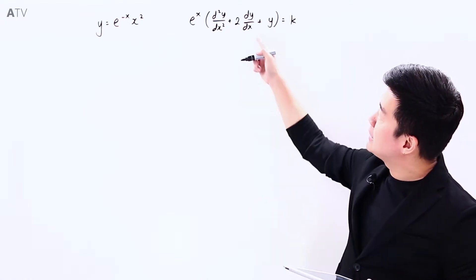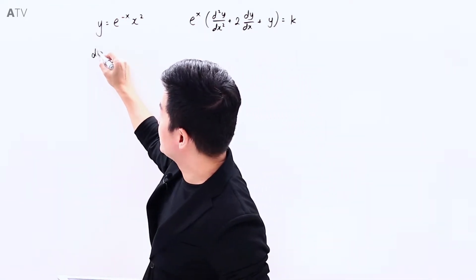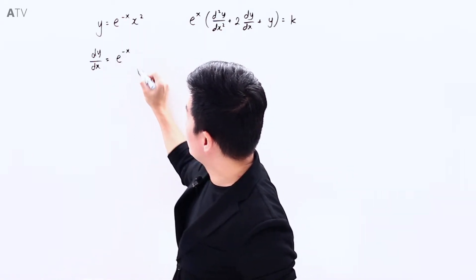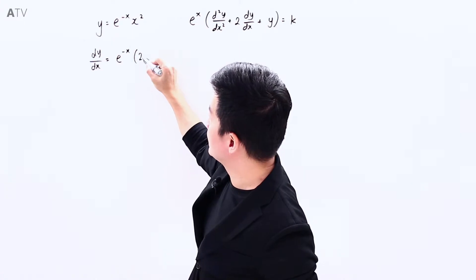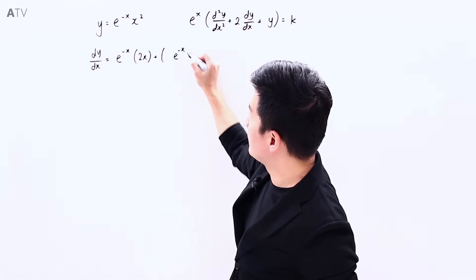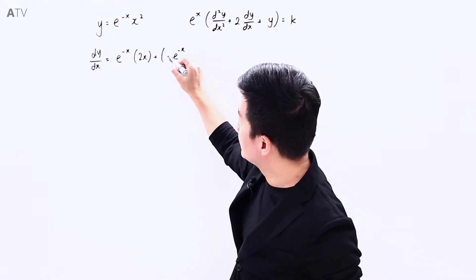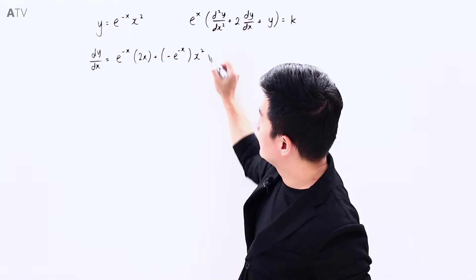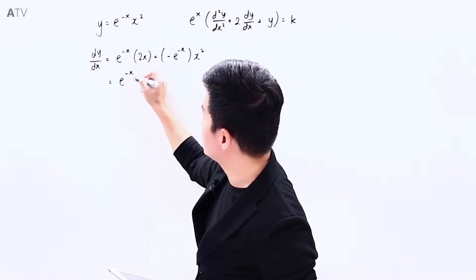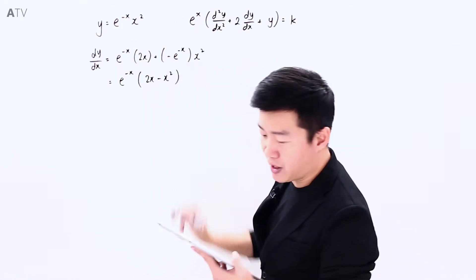To find the value of k, let's first find dy/dx. Using the product rule on y = x²e^(-x): e^(-x) remains while we differentiate x², giving 2x; then differentiating e^(-x) gives e^(-x) multiplied by -1, placing the minus sign in front. Factorizing, the expression for dy/dx becomes e^(-x)(2x - x²).